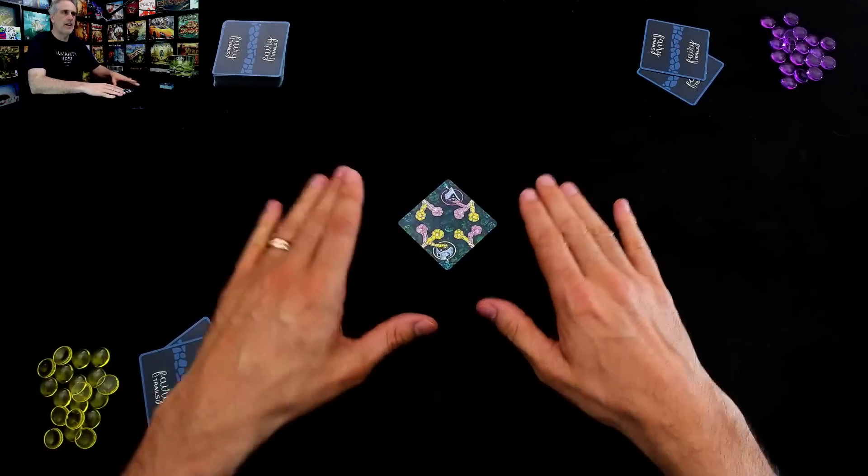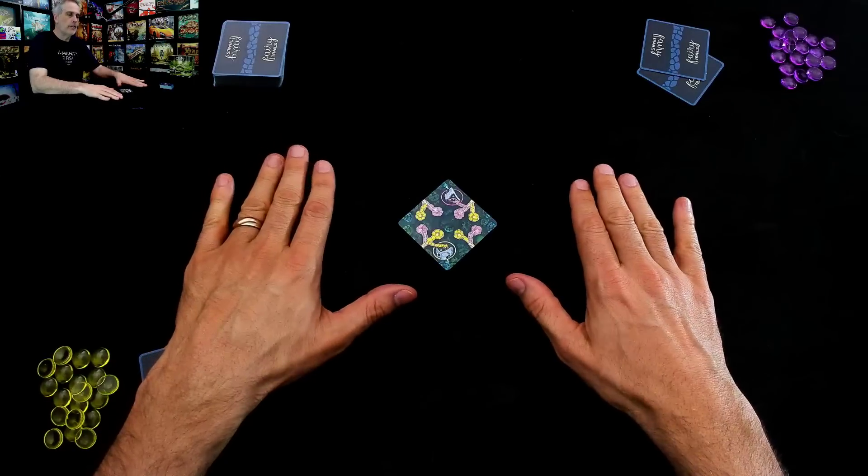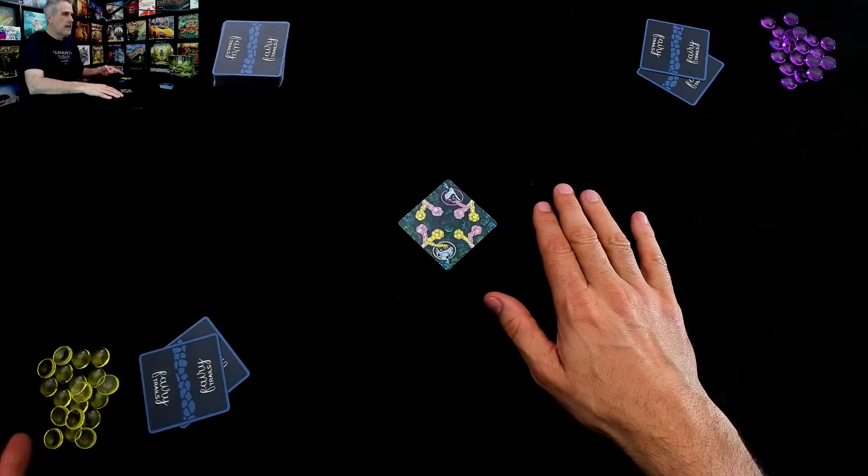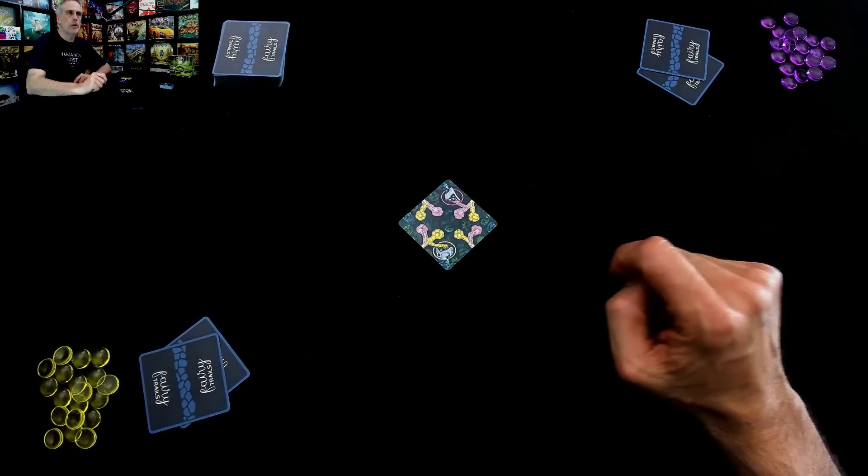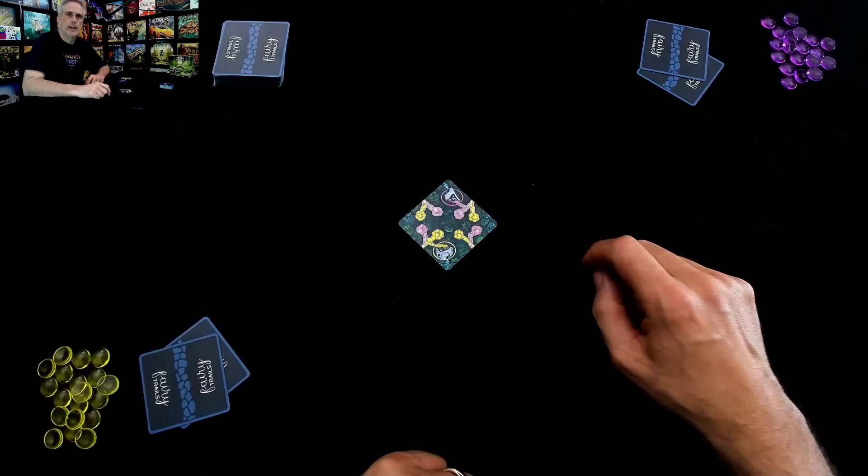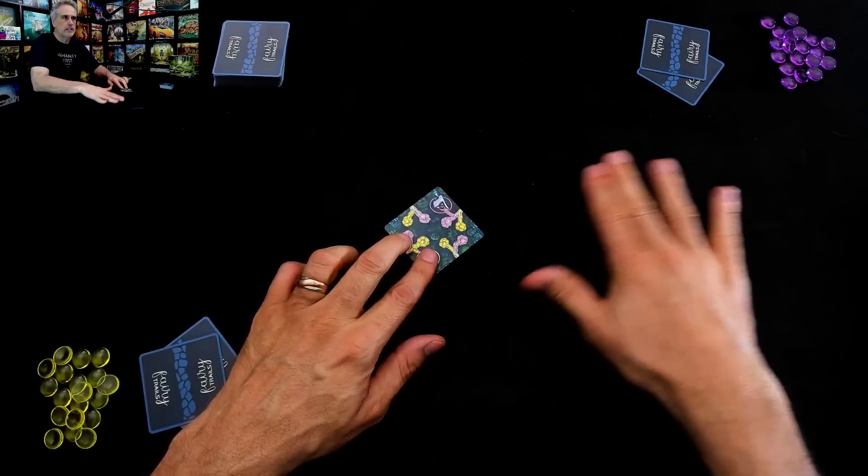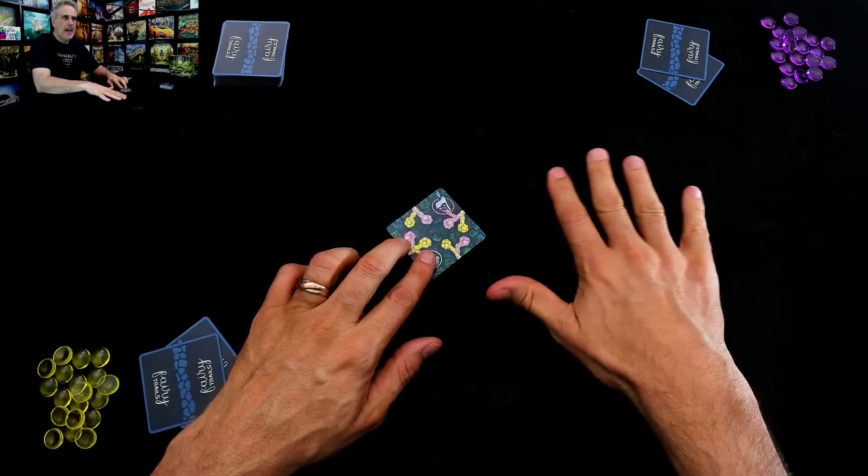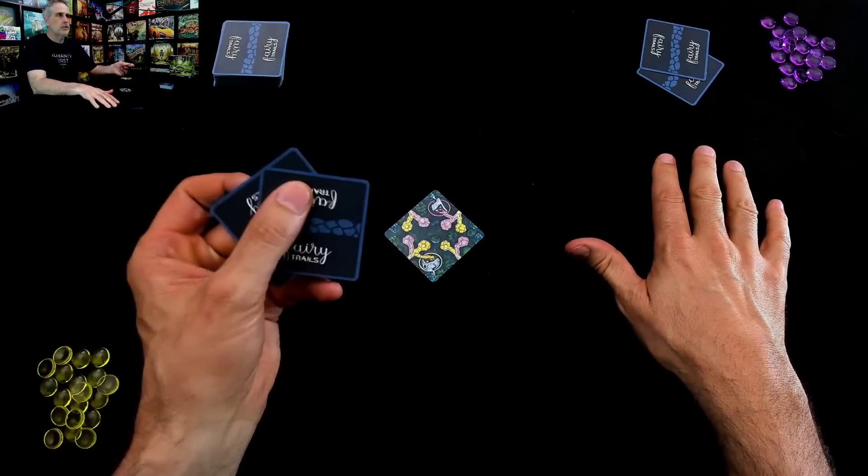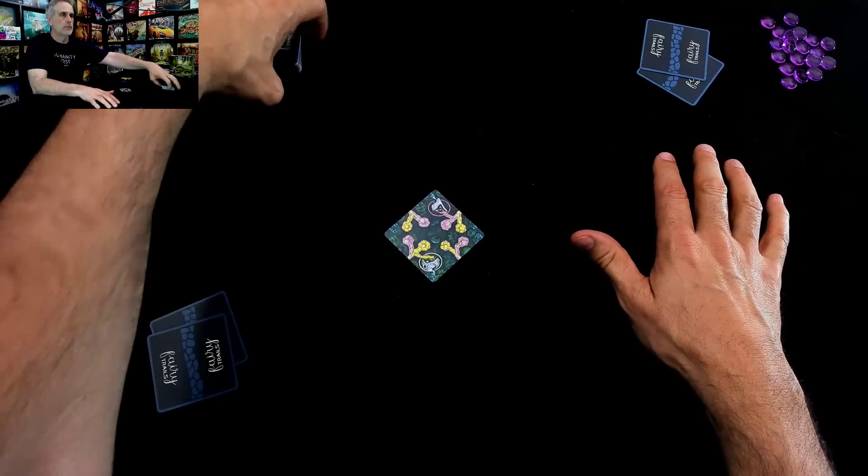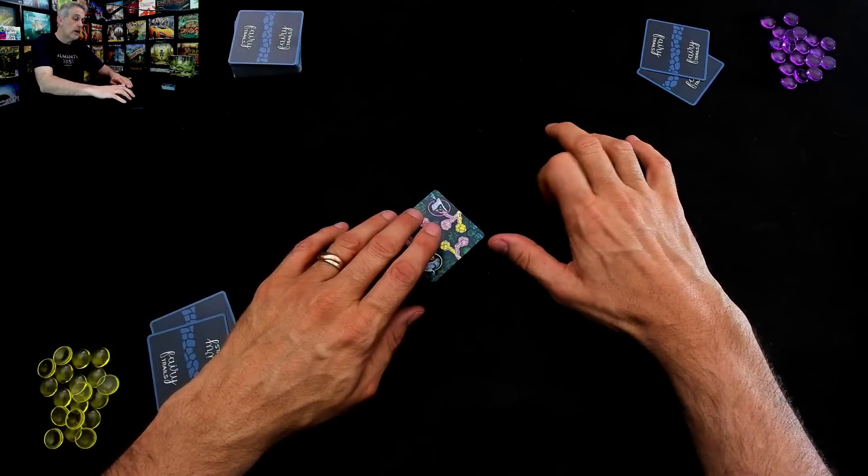This is the beginning of a forest full of trails that my Yellow Gnomes and Jen's Purple Elves will travel while trying to make homes for themselves. This is the starting card that is always placed out in the beginning of the game. And at the beginning of the game, each player gets two cards randomly from the draw pile, and we are ready to go.